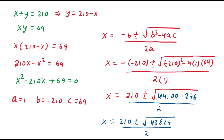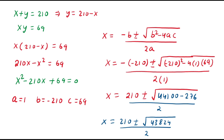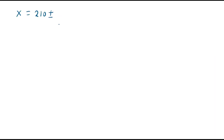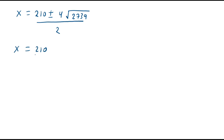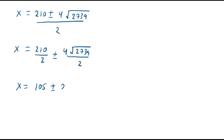The radical expression 43,824 can be simplified as 4 times square root of 2739, divided by 2. So x equals 210 divided by 2 plus or minus 4 times square root of 2739 divided by 2. This gives x equals 105 plus or minus 2 times square root of 2739.